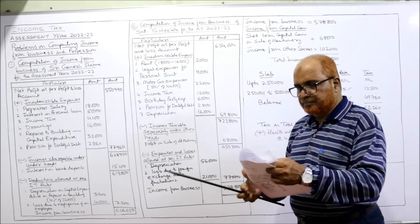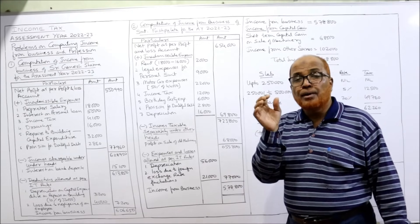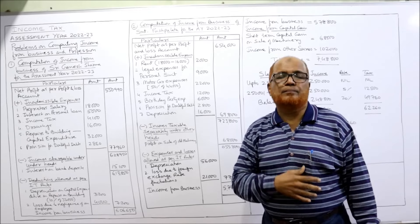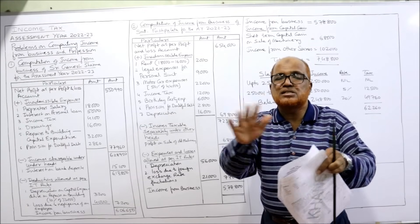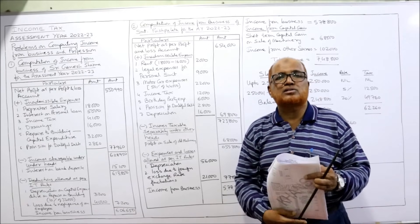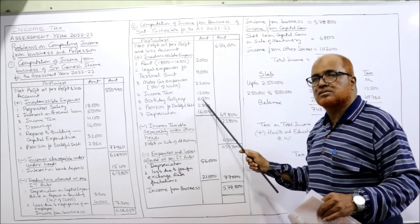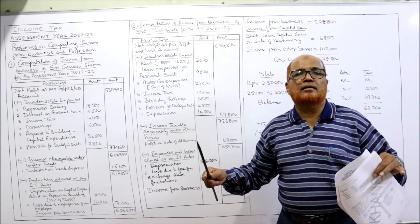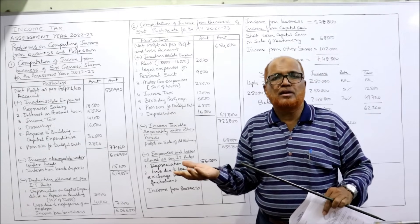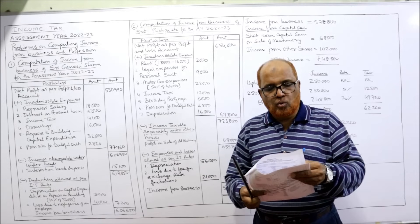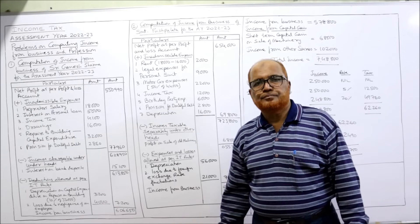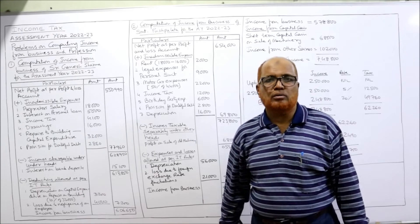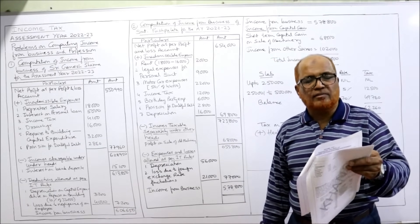Birthday party expenses: it is a personal occasion, so the expenses are personal. Even though debited to P&L, the Income Tax Act says it is disallowed — personal expenses debited to P&L are disallowed. Birthday party expenses — 6,000 — disallowed. Annual day expenses of the shop: the assessee is celebrating the shop's annual day — that is a business expenditure and is allowed as deduction. GST paid, customs duty, excise duty, and import duty are allowed; income tax is not. GST — allowed, nothing to be done.